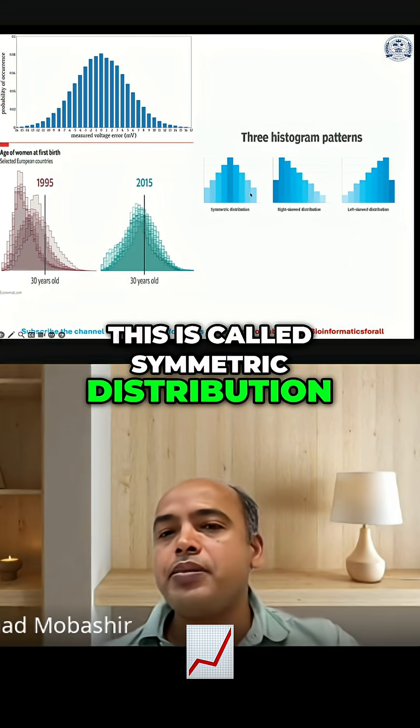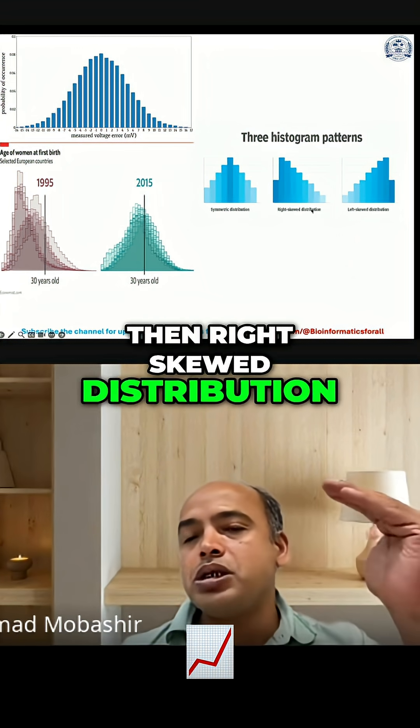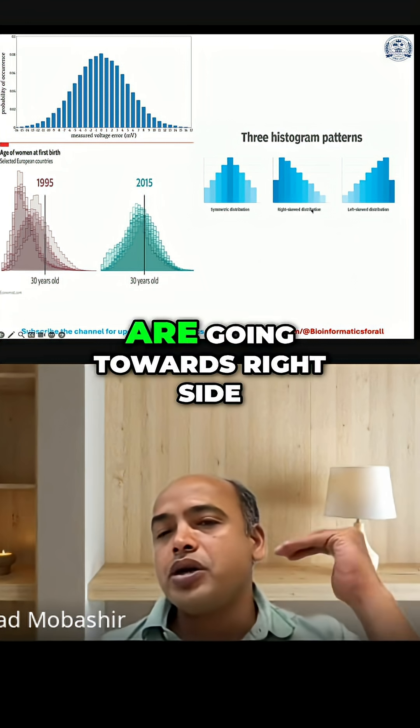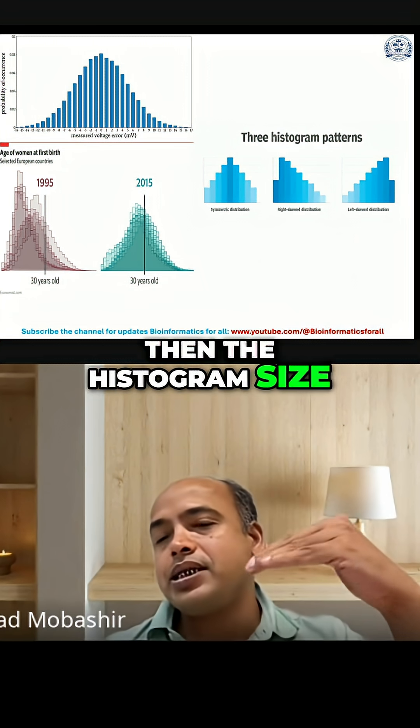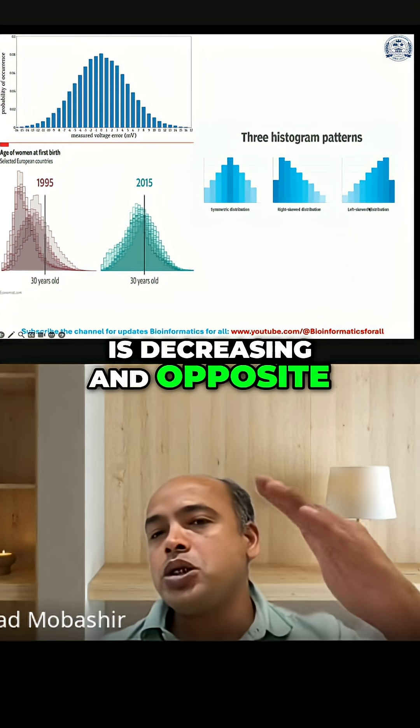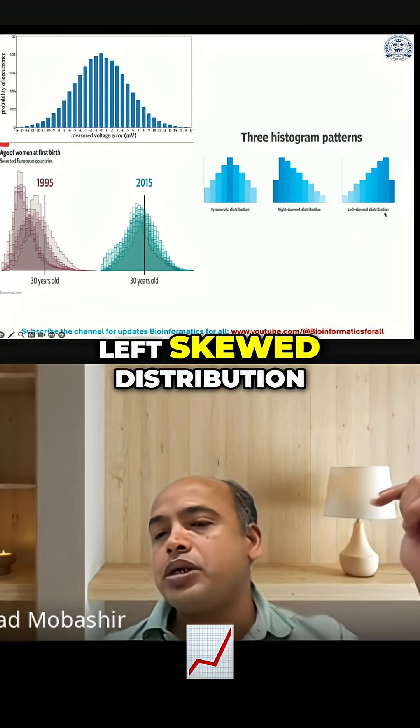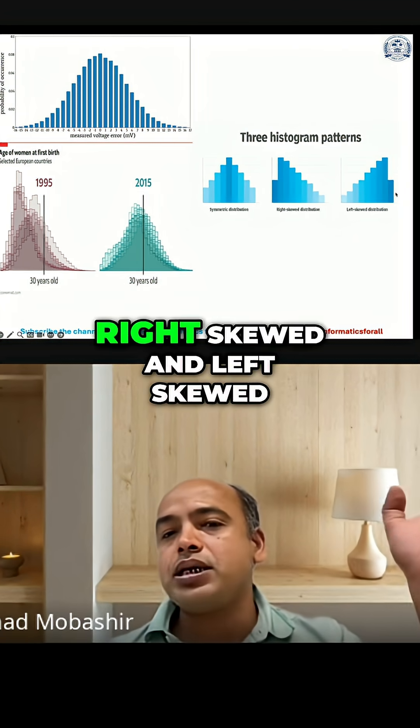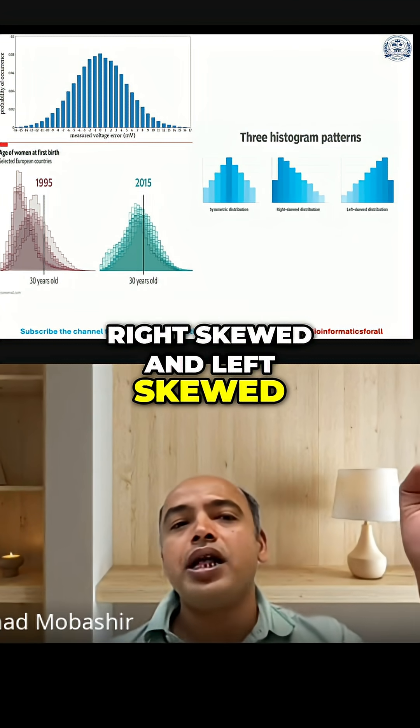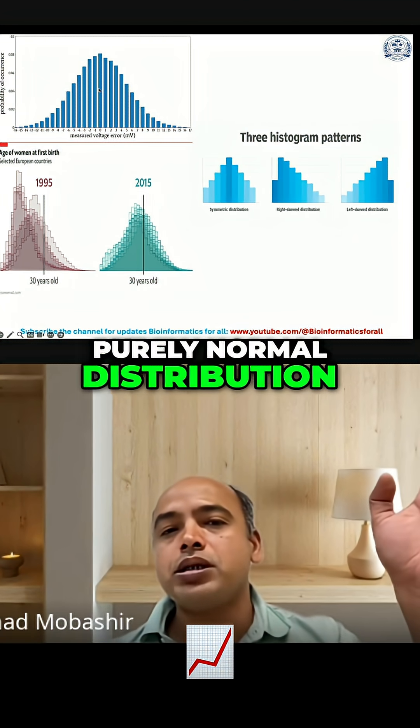For example, this is called symmetric distribution. Then right skewed distribution - that means when you are going towards the right side, then the histogram size is decreasing. And opposite to it, that is left skewed distribution. So here it is decreasing, here it is increasing. So this is called right skewed and left skewed, and this is called purely normal distribution.